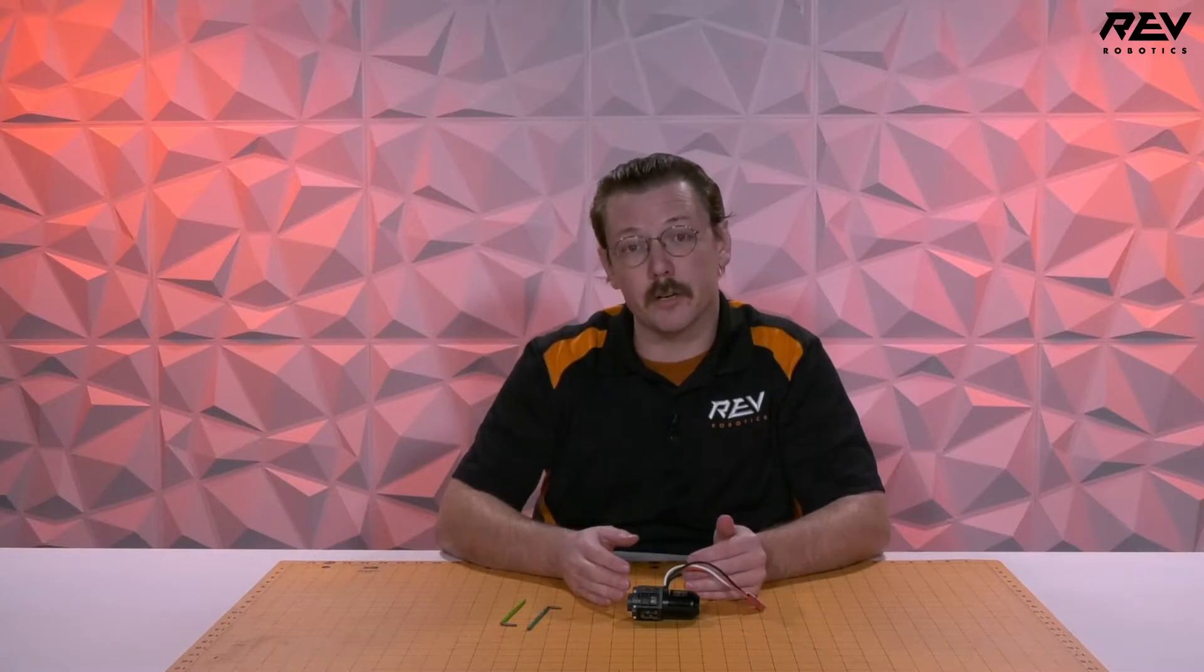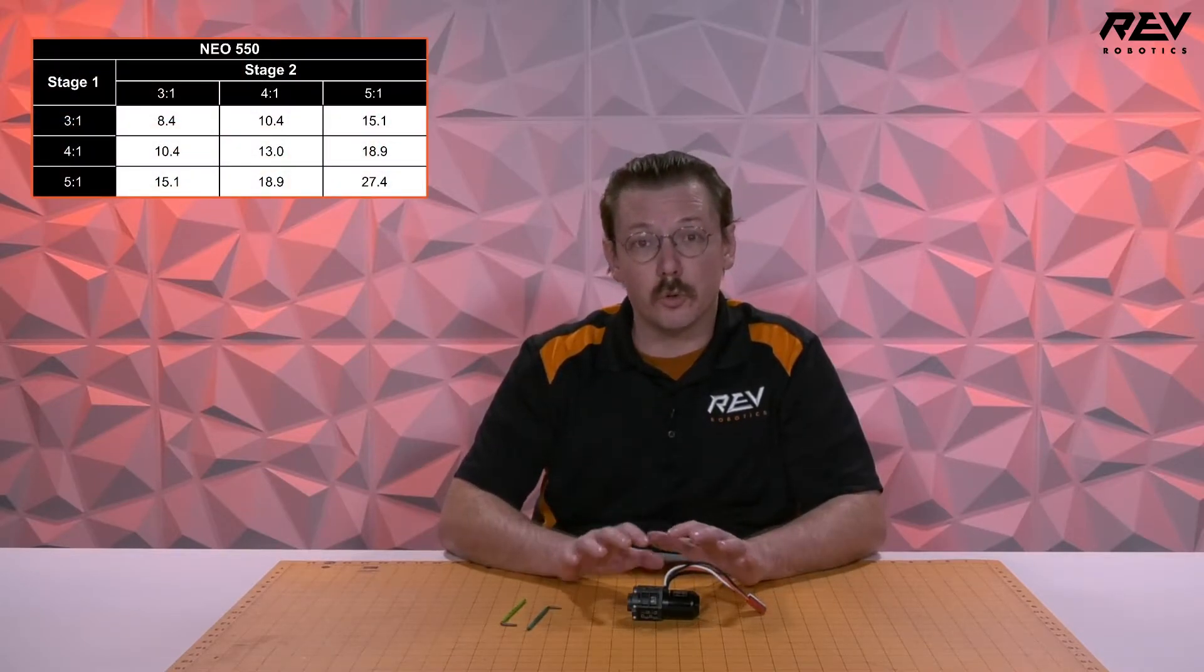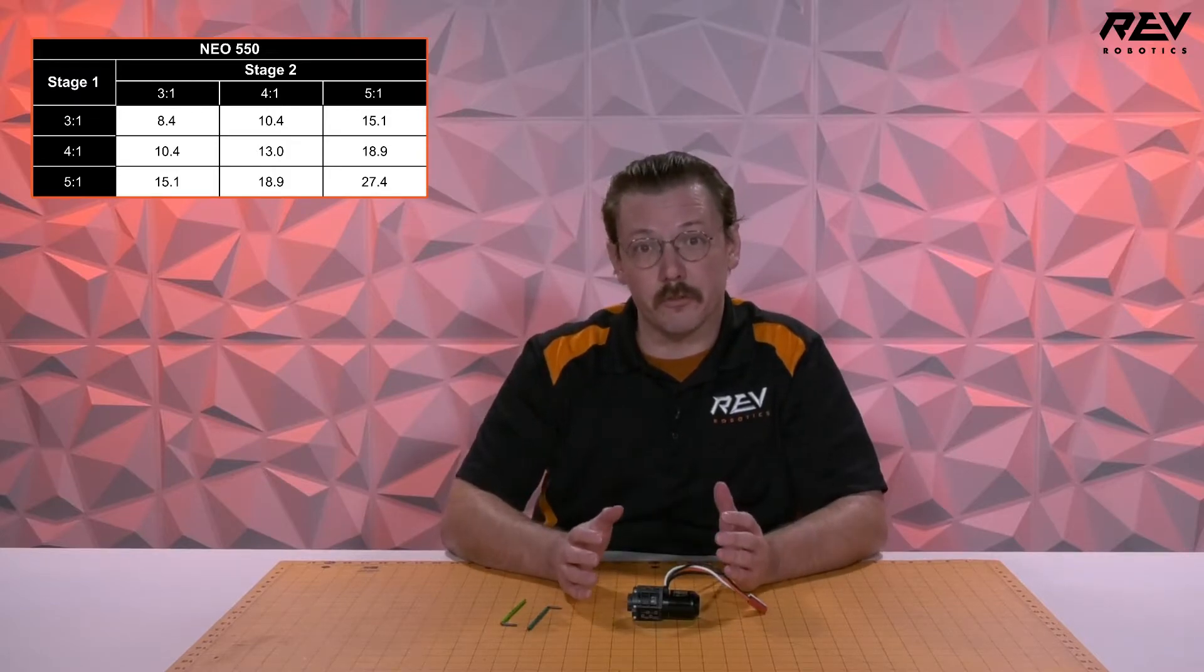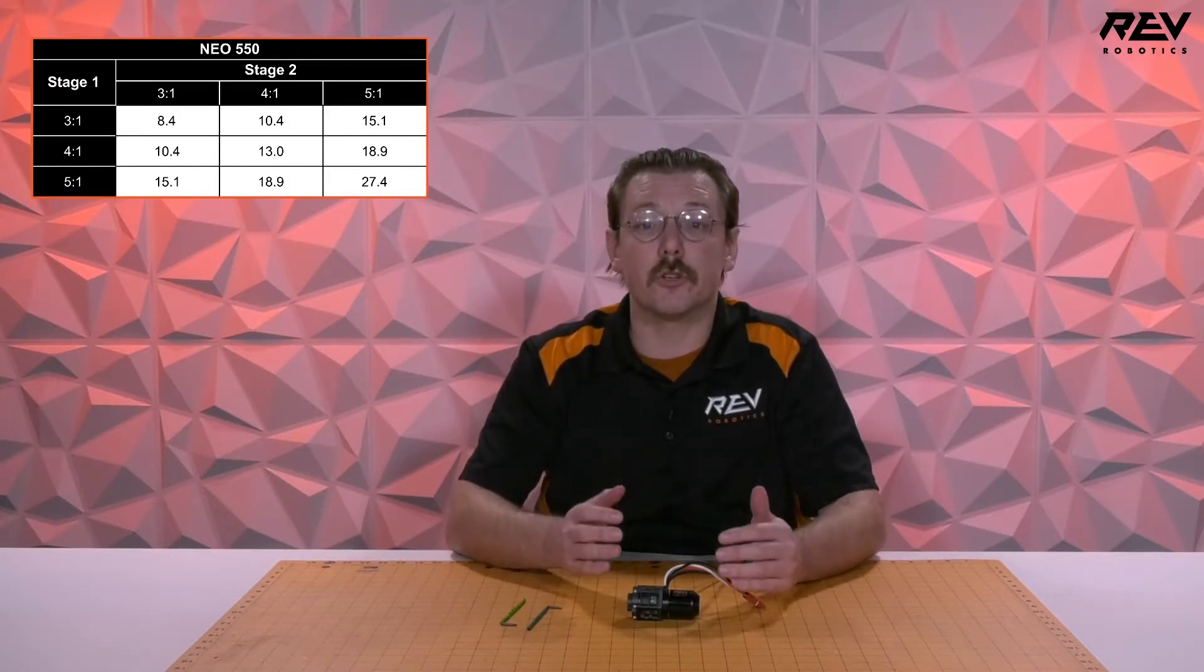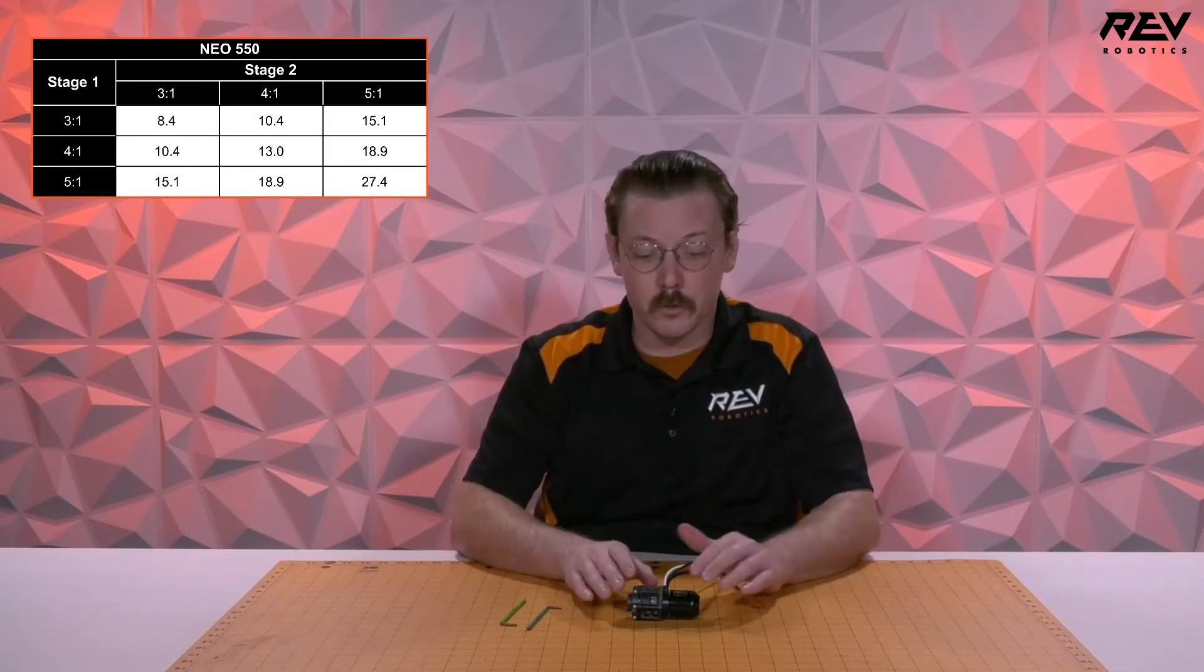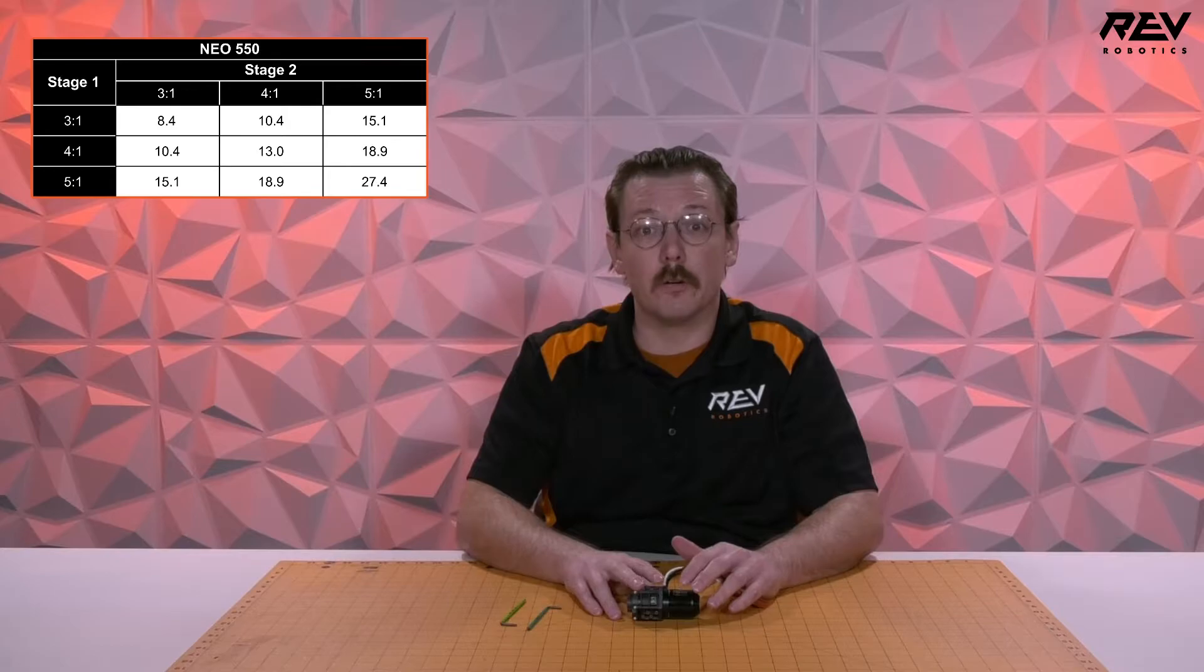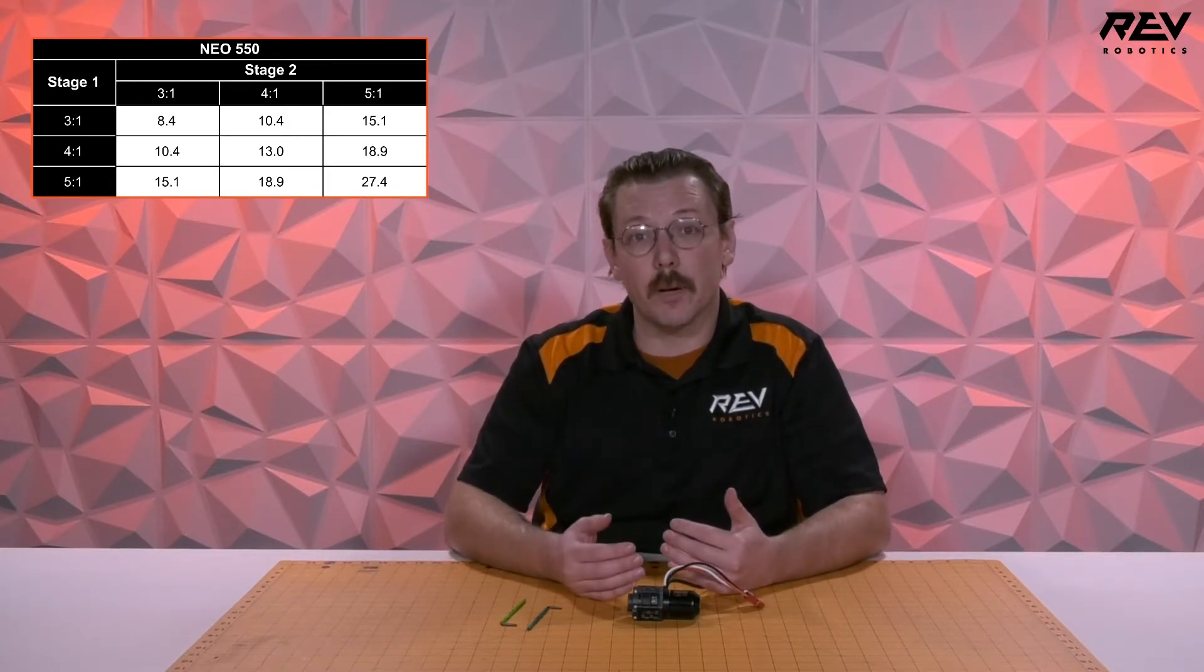One thing that you want to keep in consideration while constructing your ultraplanetary gearbox and building your mechanisms is the load ratings for the ultraplanetary gearbox itself. Most two cartridge gearboxes, you're going to be perfectly fine and able to use them within most applications with the NEO 550. You definitely should consult the user's manual, though, as you start building three cartridge gearboxes. For our load ratings for this 20 to 1, looks like we are a-okay and good to go. And now we can start thinking about options for driving different mechanisms that are commonly used within FRC.